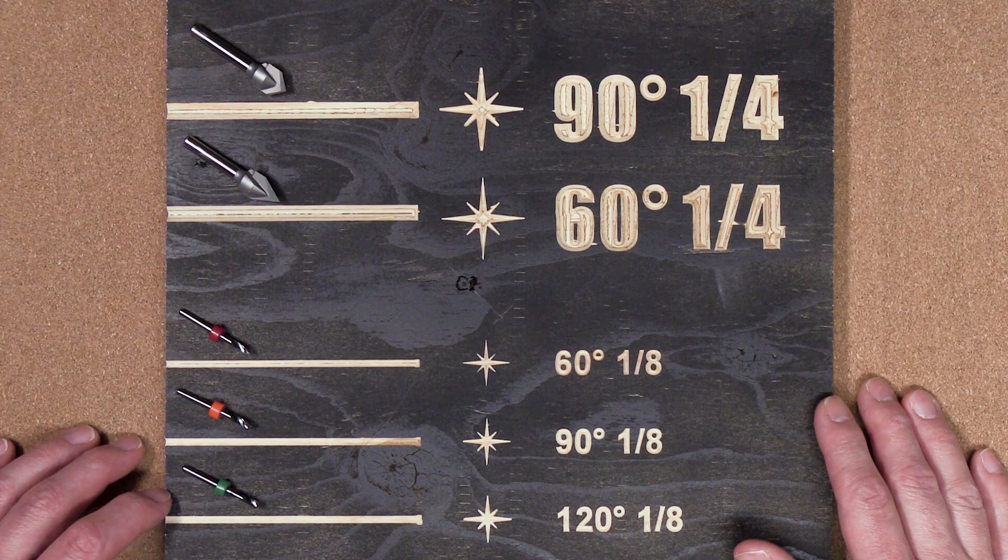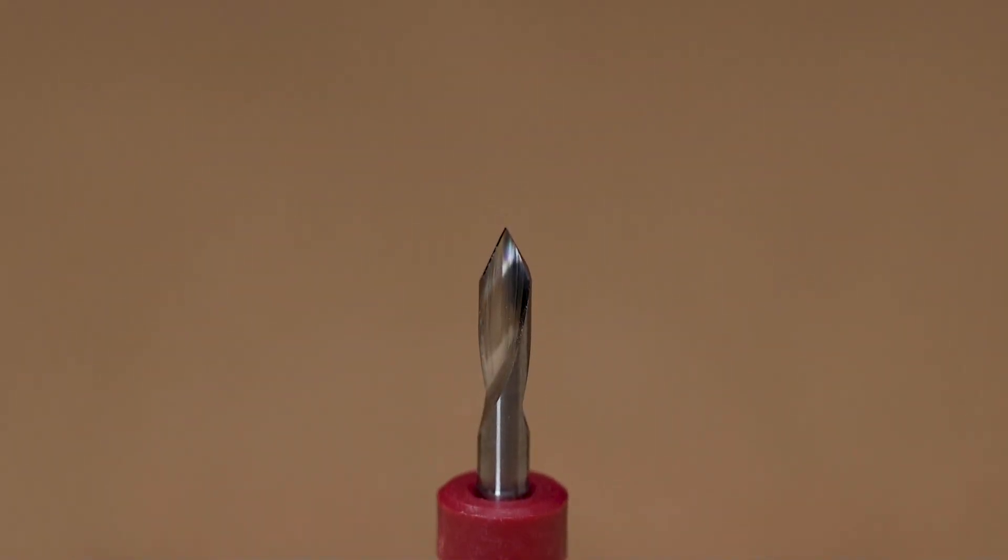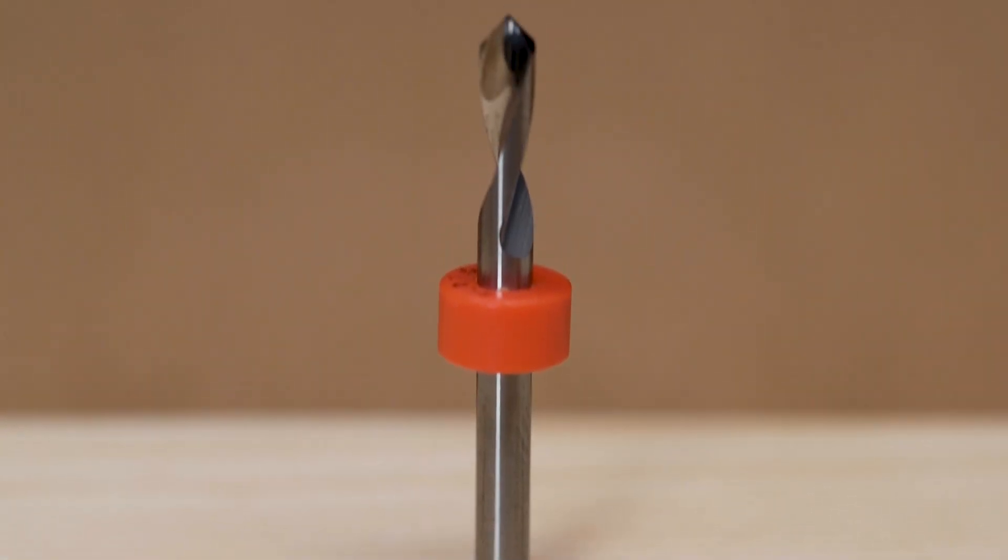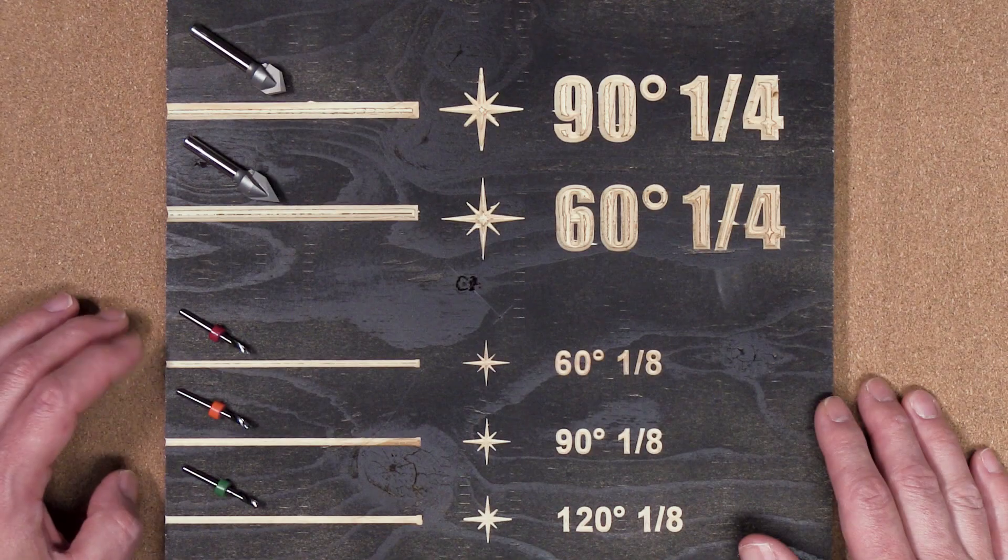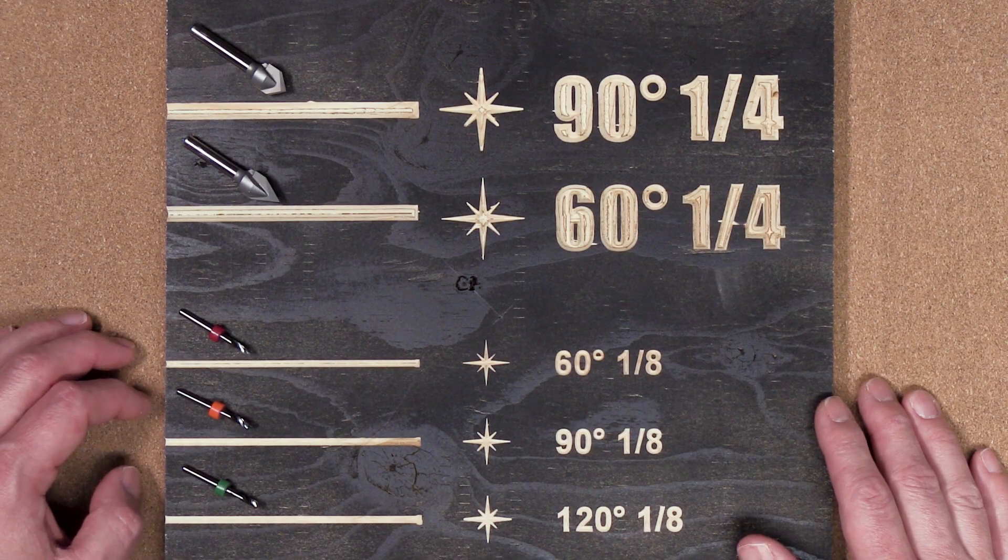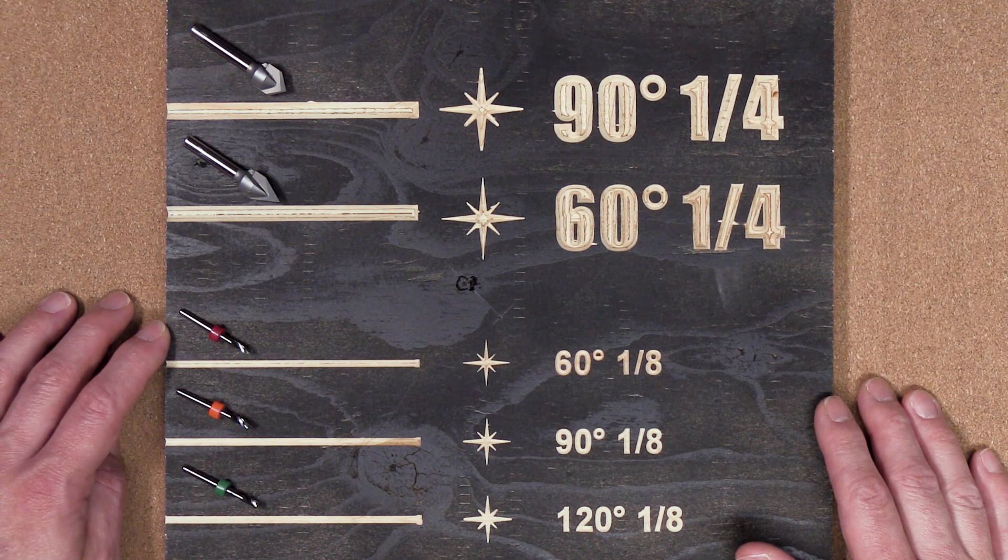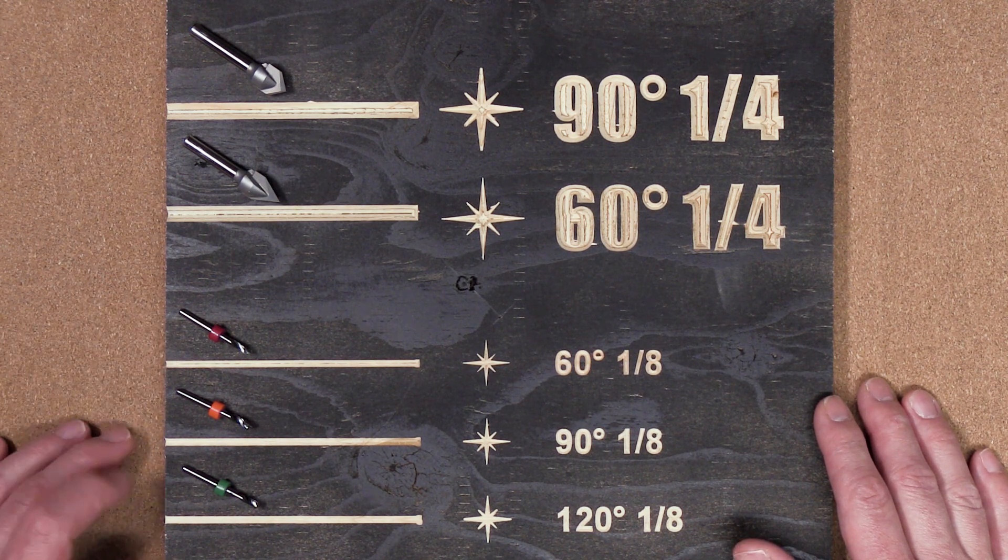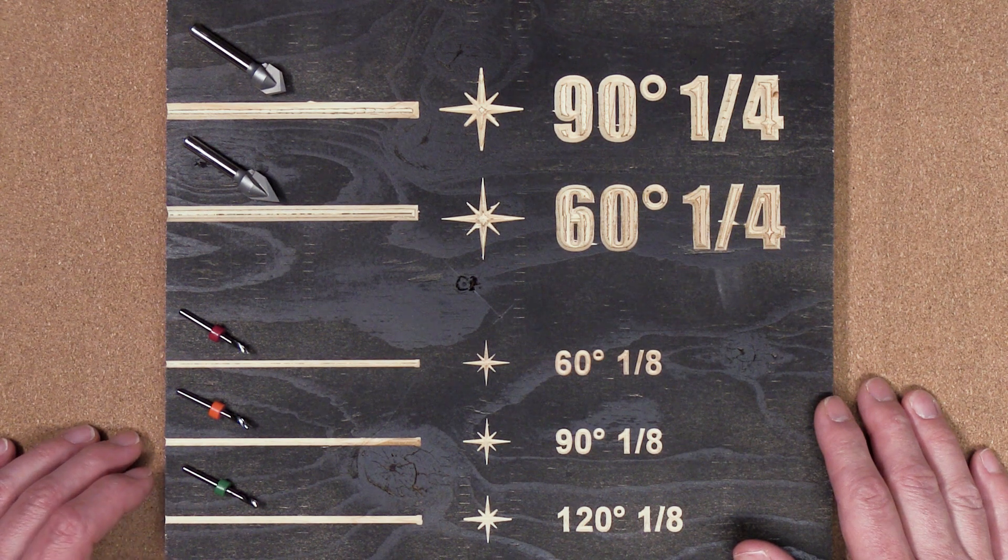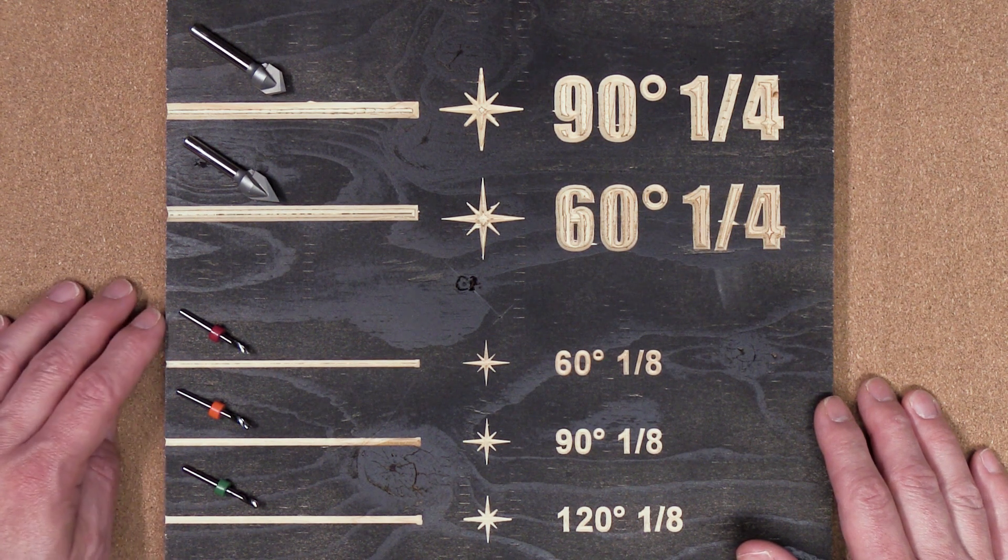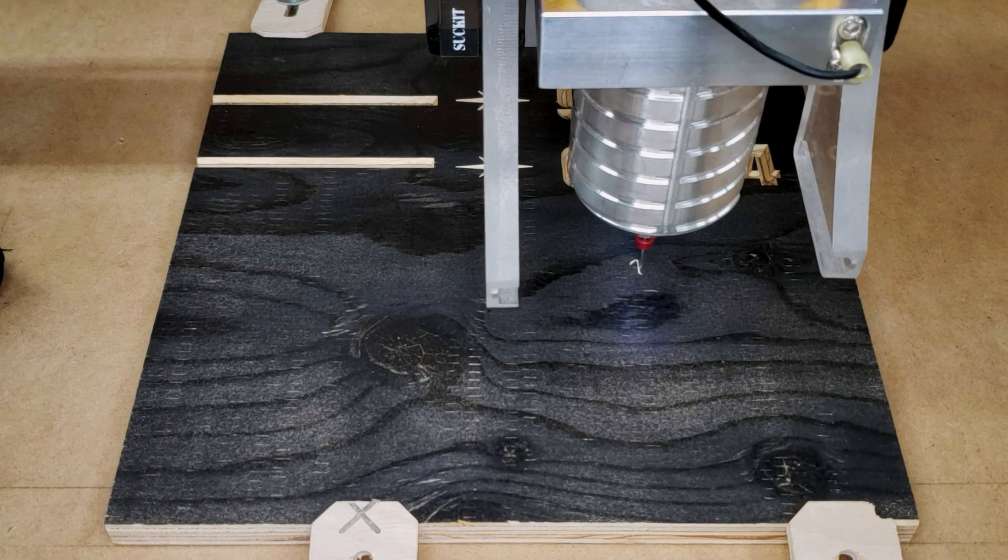Now let's have a quick look at these 1/8 bits for comparison. These 1/8 V-bits basically do the same thing that the quarter inch V-bits do, just on a scaled down level. So you would typically use these V-bits on projects where a lot of fine detail is needed, with the 60 degree bit giving you the finest, deepest cuts and the 120 degree bit producing the widest, shallowest cuts, but also letting you have the least amount of passes needed for your project.